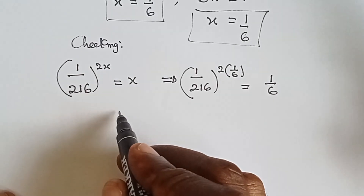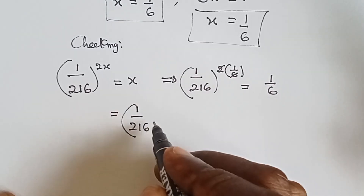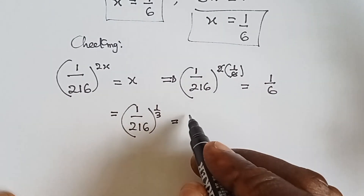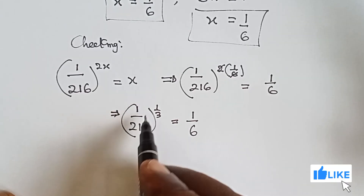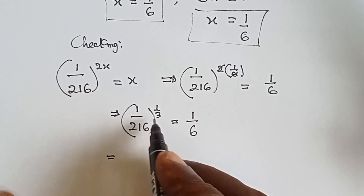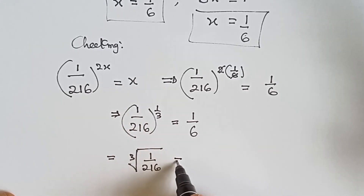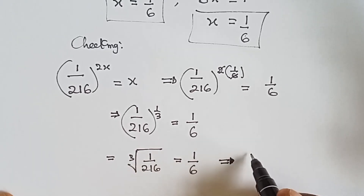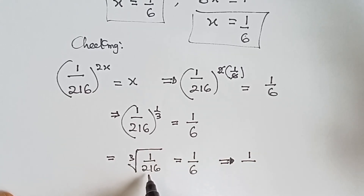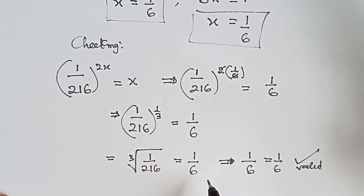We can divide 6 by 2, which gives 1 over 3. So we have 1 over 216 raised to the power 1 over 3, which equals 1 over 6. This is the same as the cube root of 1 over 216. The cube root of 1 is 1, and the cube root of 216 is 6, so we get 1 over 6 equals 1 over 6. That confirms our answer x equals 1 over 6 is valid.